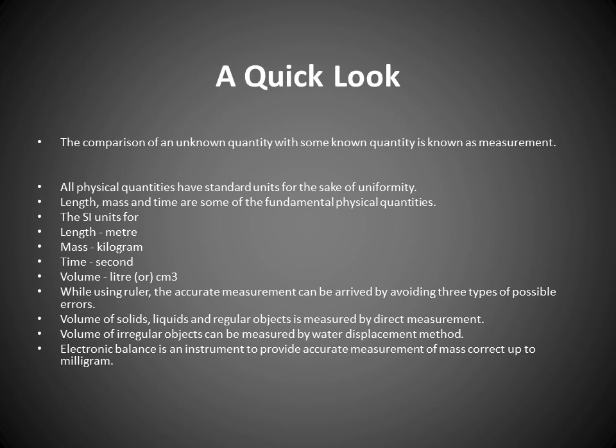Summary: Measurement is the comparison of an unknown quantity with a known standard quantity. All physical quantities have standard units for the sake of uniformity. Length, mass, and time are fundamental physical quantities. Their SI units are: length — meter, mass — kilogram, time — second, volume — liter or cm³. Volume of regular objects is measured by direct measurement; volume of irregular objects can be measured by the water displacement method. An electronic balance provides accurate measurement of mass correct up to milligrams. Thank you — please subscribe to the channel, share, and comment.